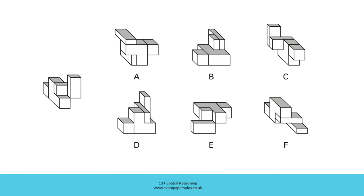Now look at F. Again, if we rotated this figure upwards so the two cuboids were correctly positioned, the cube would be incorrectly placed — it would be attached to this section of the L-shaped block rather than towards the back. So F is wrong as well, and it means that option D is in fact the right answer. If we rotated this figure around, we would find it to be exactly the same as the original, confirming it represents a rotated version of that original figure.